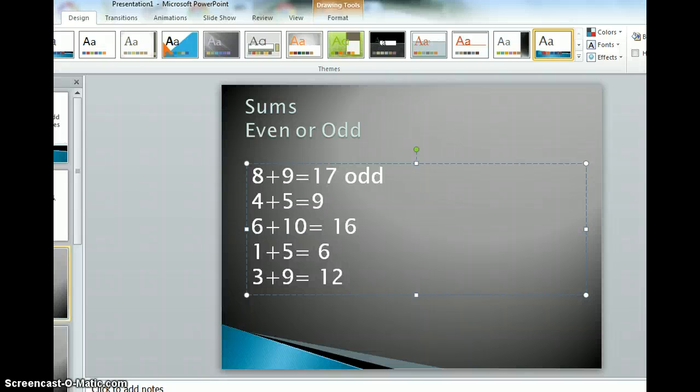Let's try 6 plus 10. 6 plus 10 is 16. We look at the number in the ones place, which is the 6, and we can make sure that it is equal or even. So 2, 4, 6, we say 6 when we count by 2s, so that makes it even.